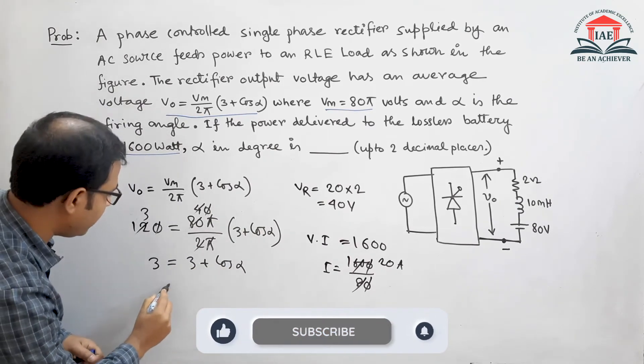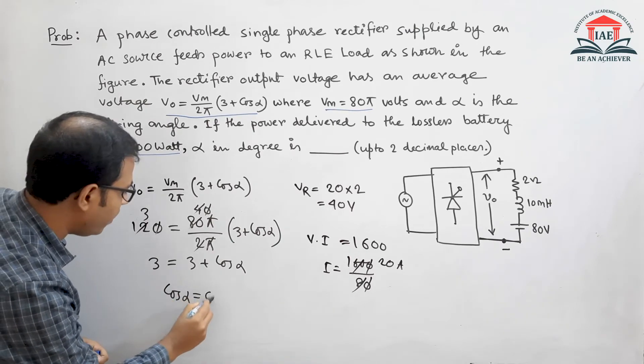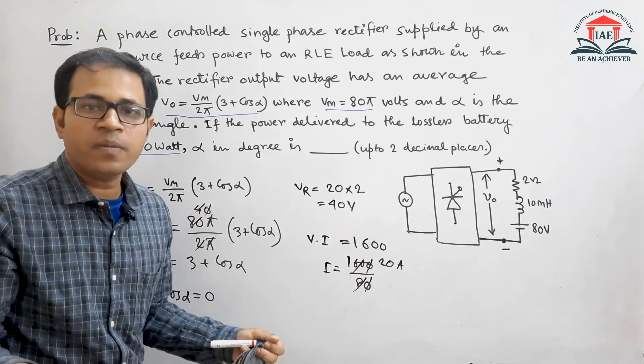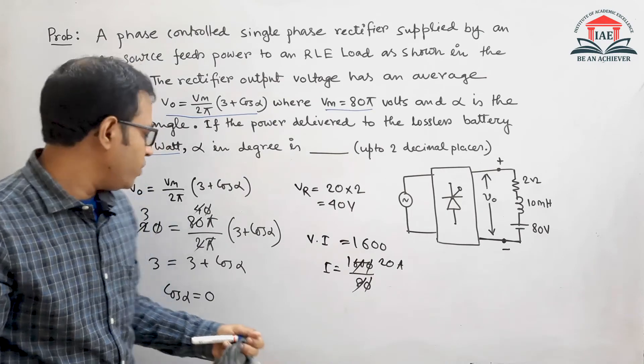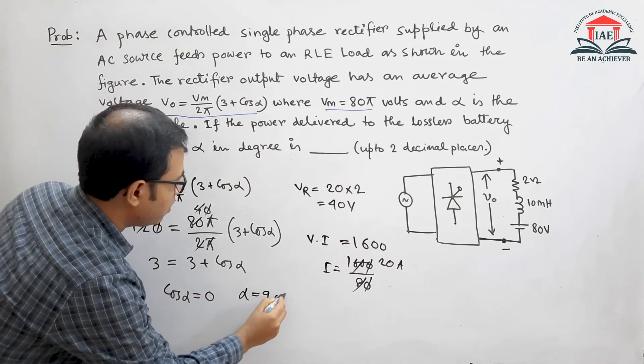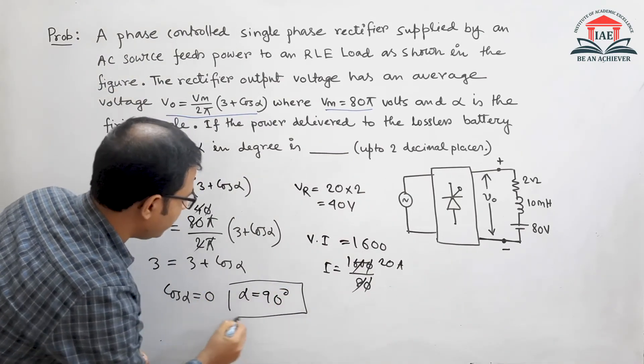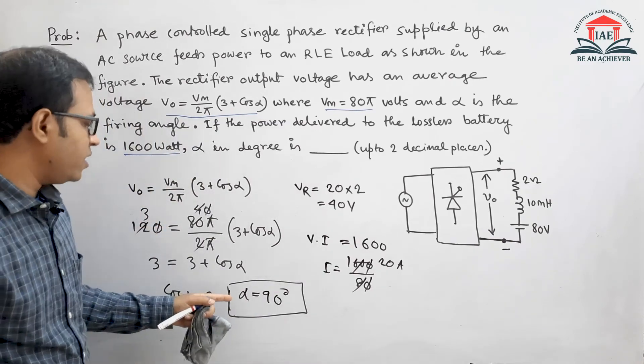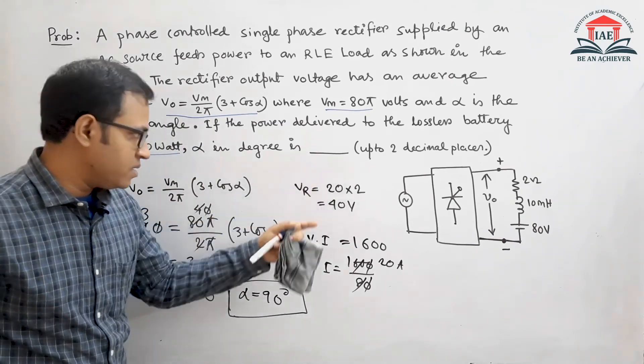Which is nothing but cos α equals 0. When cos α equals 0, alpha equals 90 degrees. So this will be the answer: α equals 90 degrees.